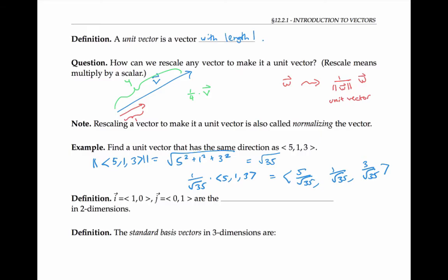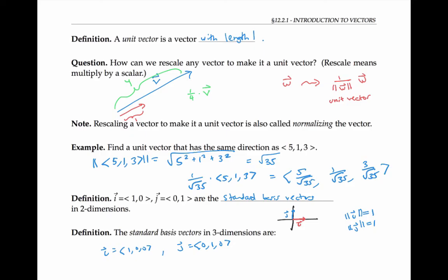For our final set of definitions: the vector i with components ⟨1, 0⟩ and the vector j with components ⟨0, 1⟩ are called the standard basis vectors in two dimensions. The vector i points in the x direction and the vector j points in the y direction. Note that i and j are unit vectors. Similarly, the standard basis vectors in three dimensions are i, j, and k, which point along the x, y, and z directions respectively.